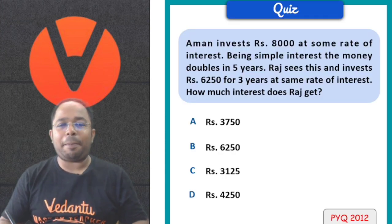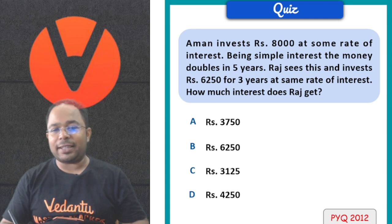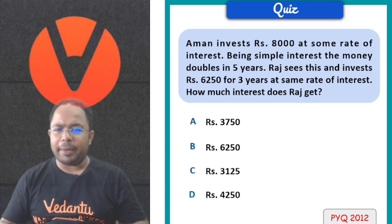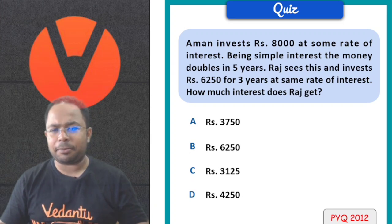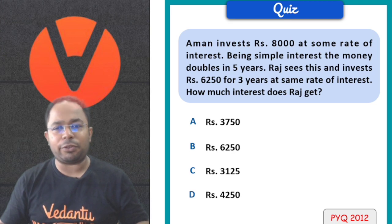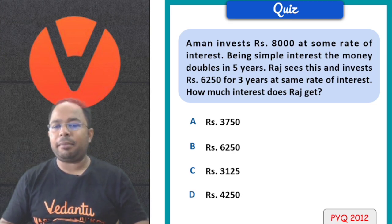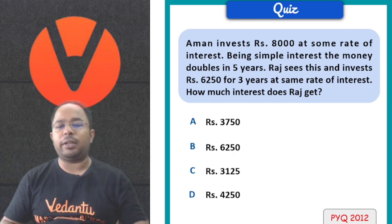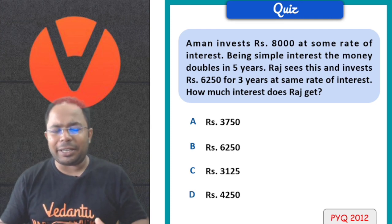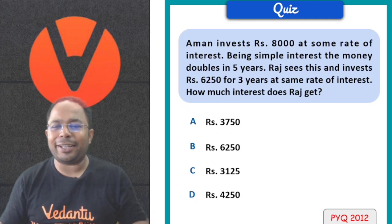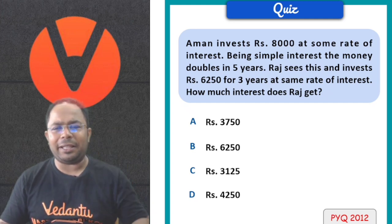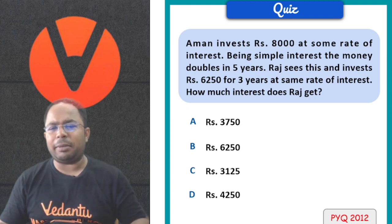Our first question is: Amand invests Rs. 8,000 at some rate of interest. Being simple interest, the money doubles in 5 years. Raj sees this and invests Rs. 6,250 for 3 years at the same rate of interest. How much interest does Raj get? So Amand invested 8,000, it got doubled. And Raj also invested his money for 3 years. Tell me, how much interest will Raj get?